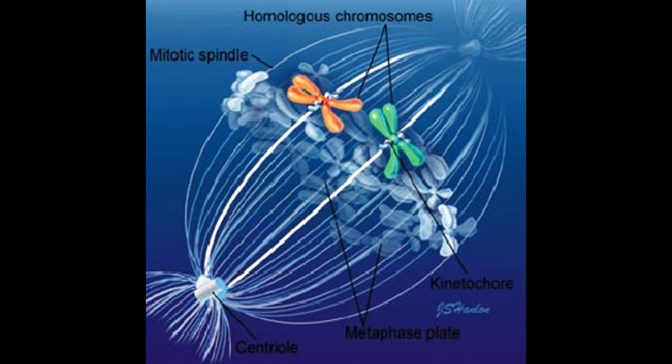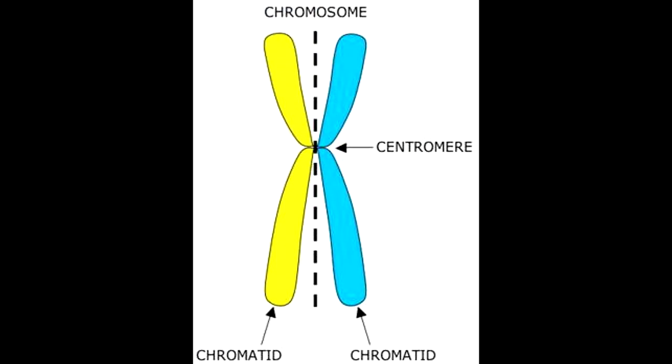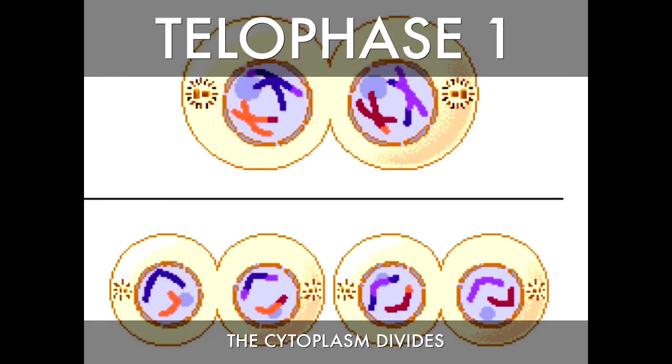Can't forget anaphase, when the chromatids go their separate ways. They're on the way to the opposite poles - the cell has almost accomplished its goal. And lastly, telophase, which makes opposite sides concave. And sneaky cytokinesis happens so fast, you won't believe this.